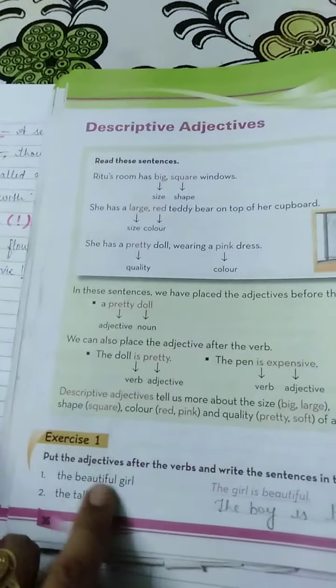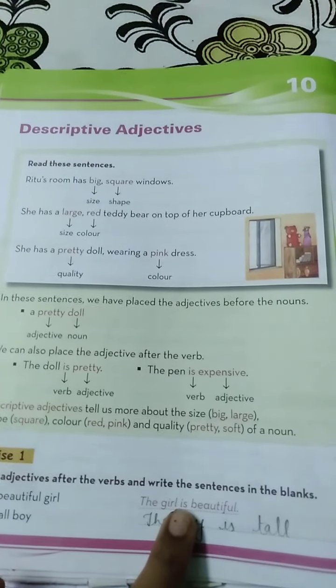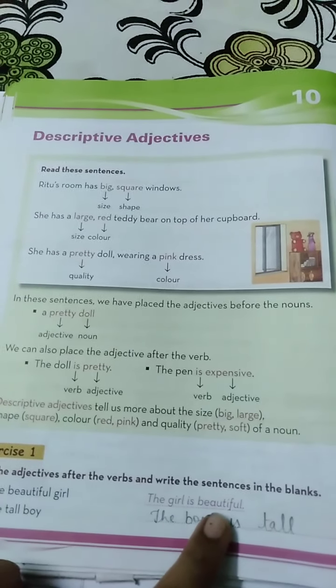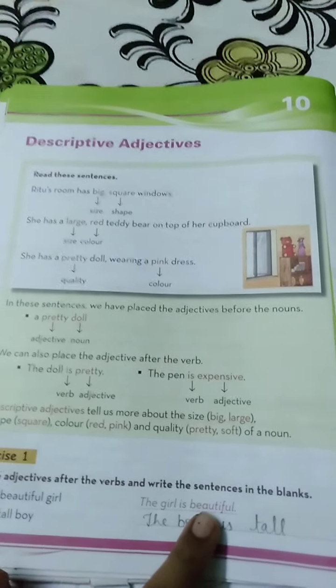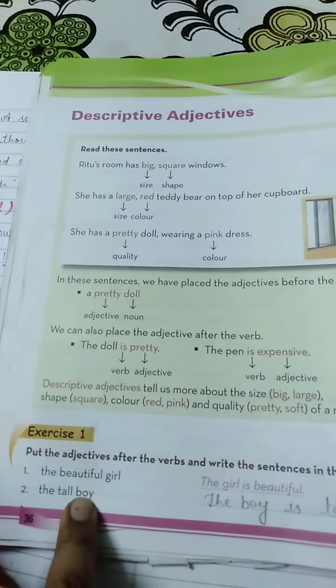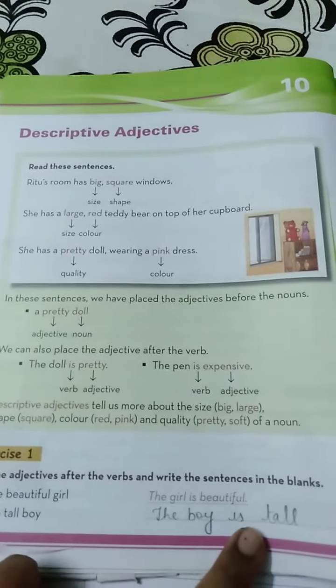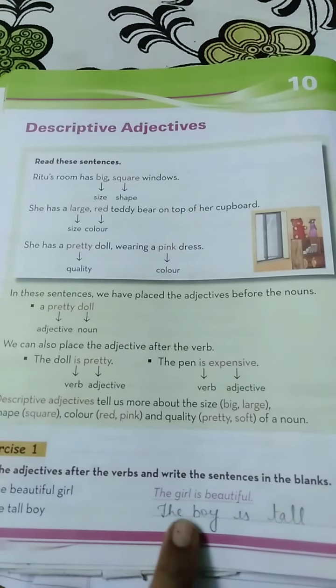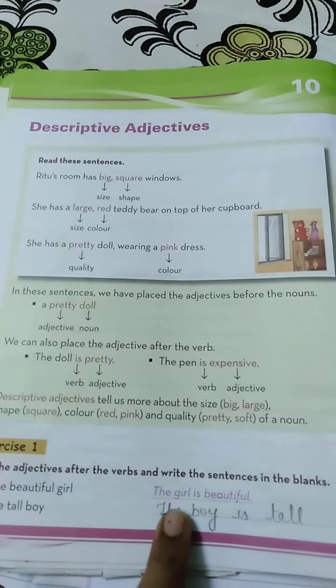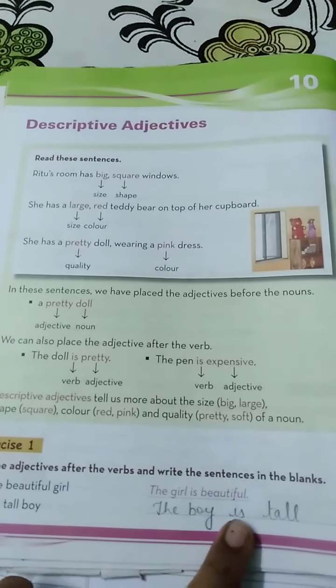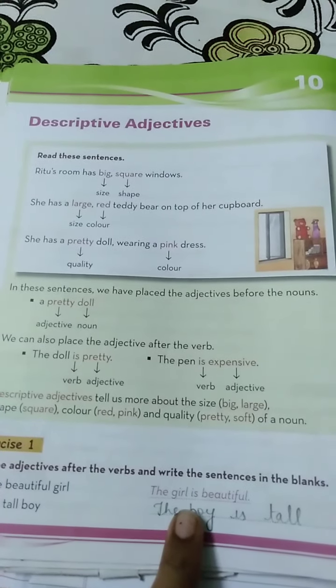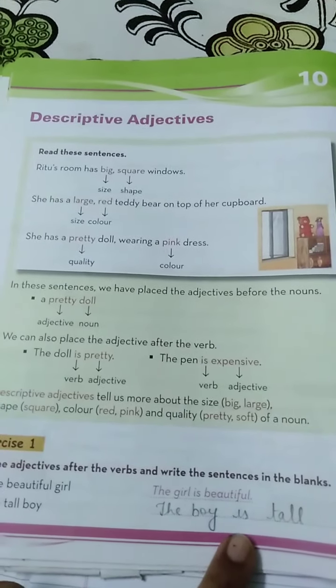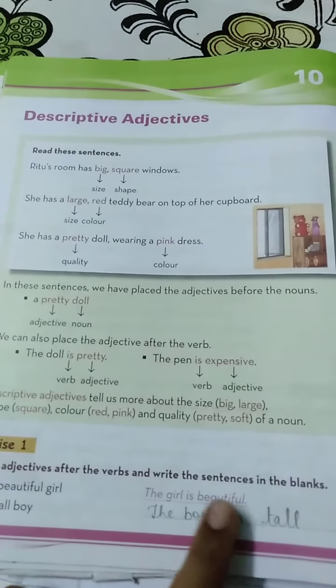Aap noun ko pehle loge, uske baad helping verb lagaoge — is, am, are, was, were, has, have, had. These are our helping verbs, and 'beautiful' is the descriptive adjective. Next: 'The tall boy' → 'The boy is tall.' Aapne noun ko starting mein rakha, phir helping verb 'is' lagayi — because the boy is singular noun, aur singular noun ke saath hum 'is' lagate hain.